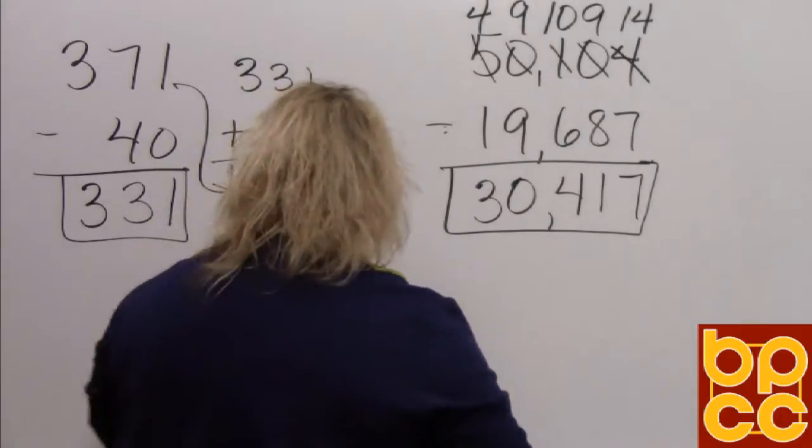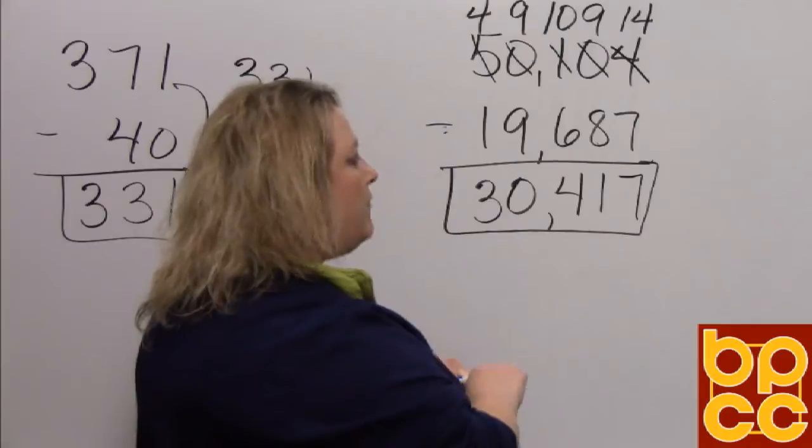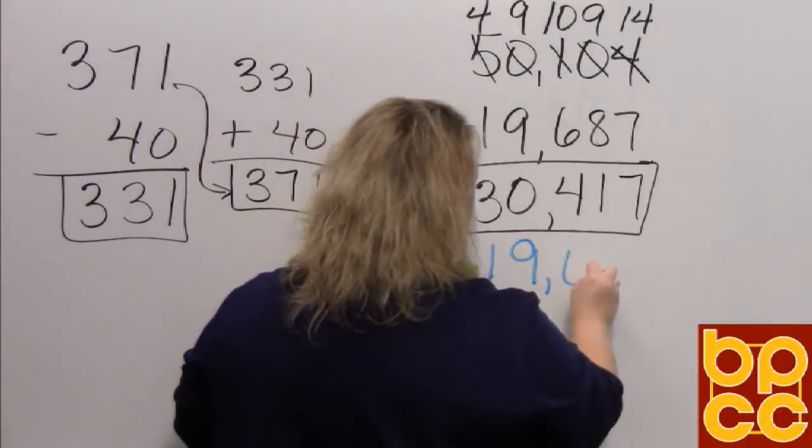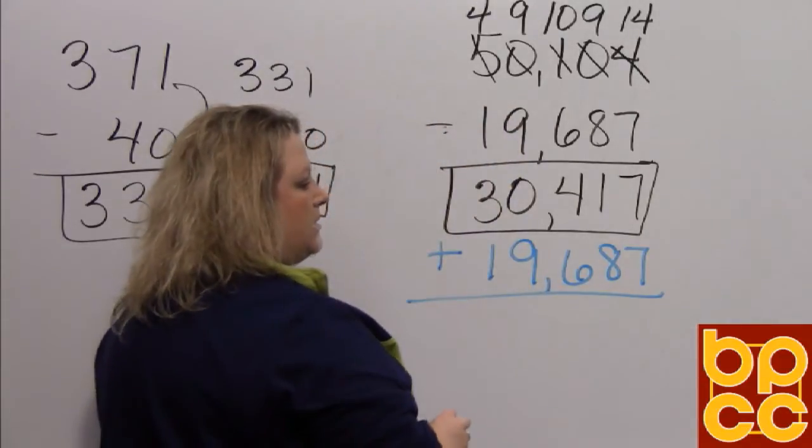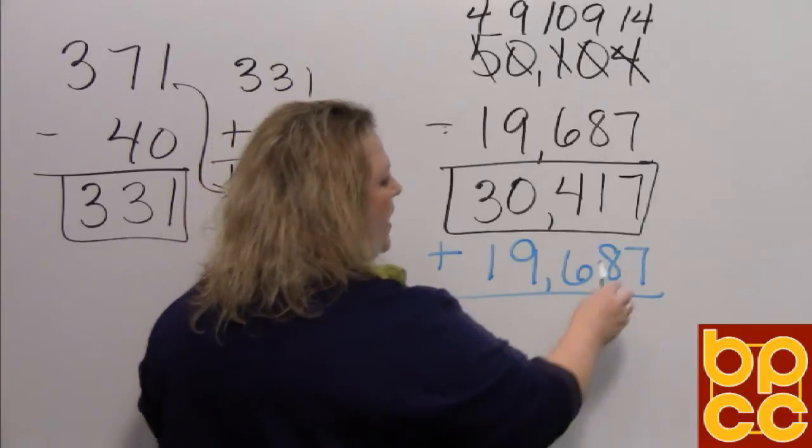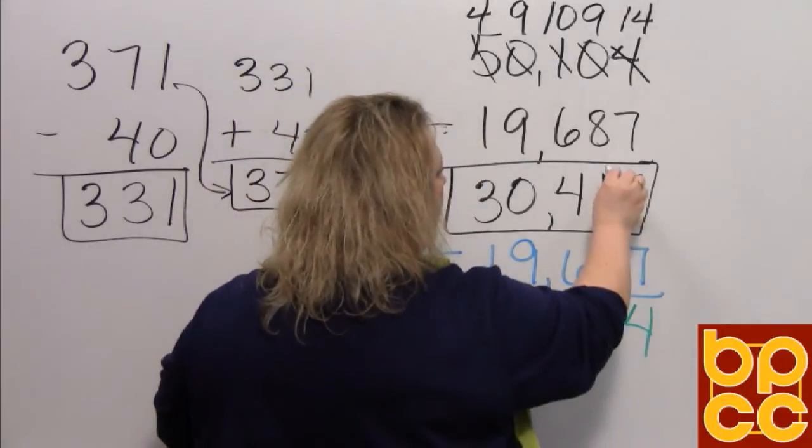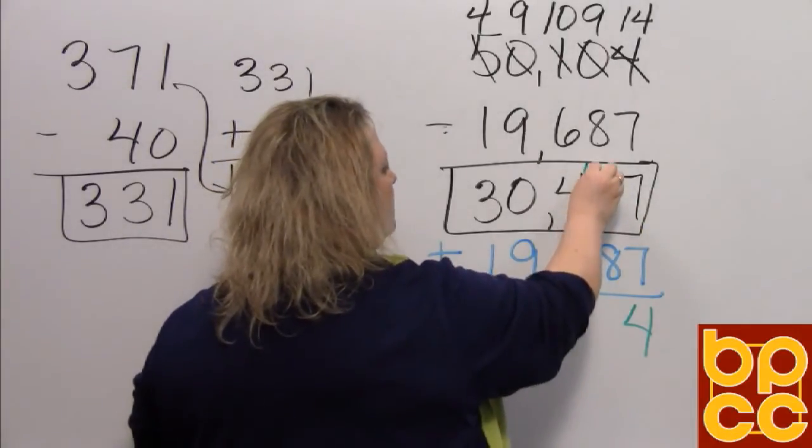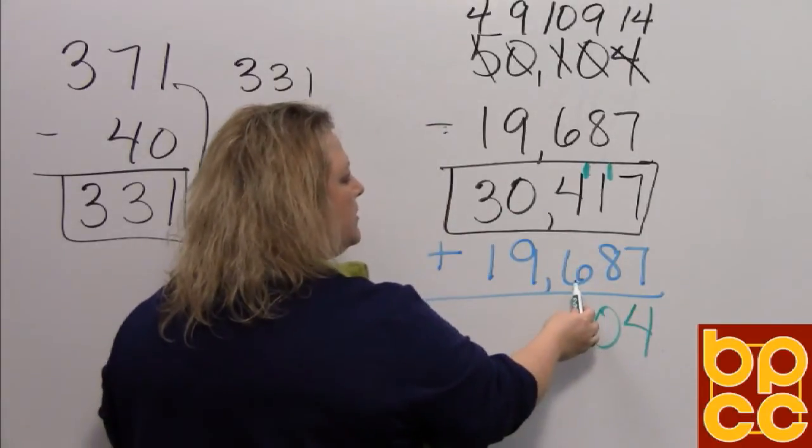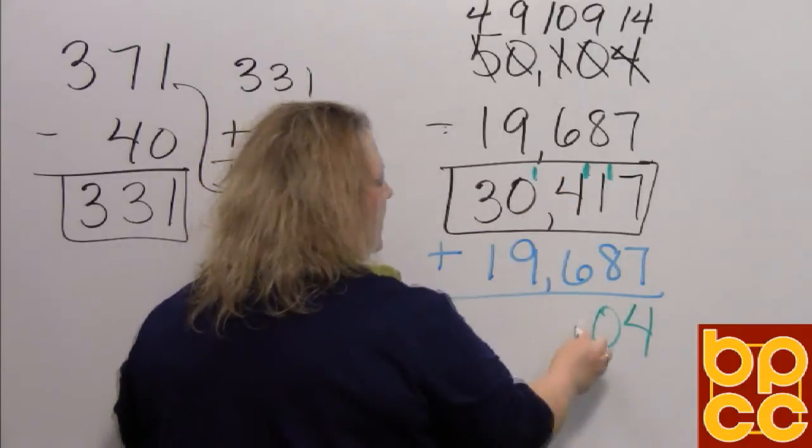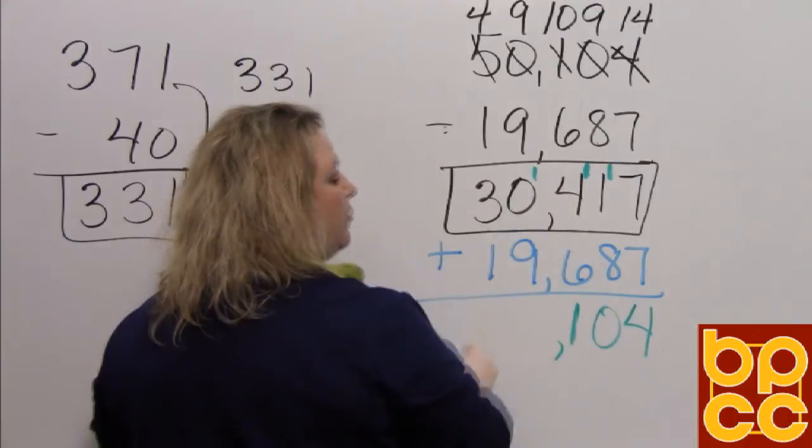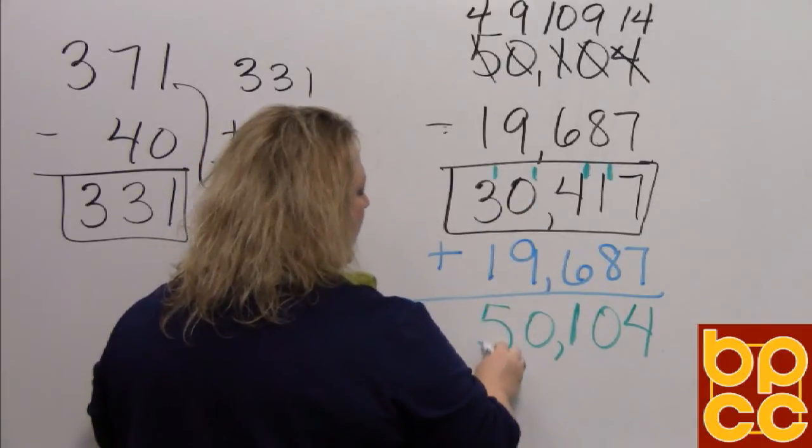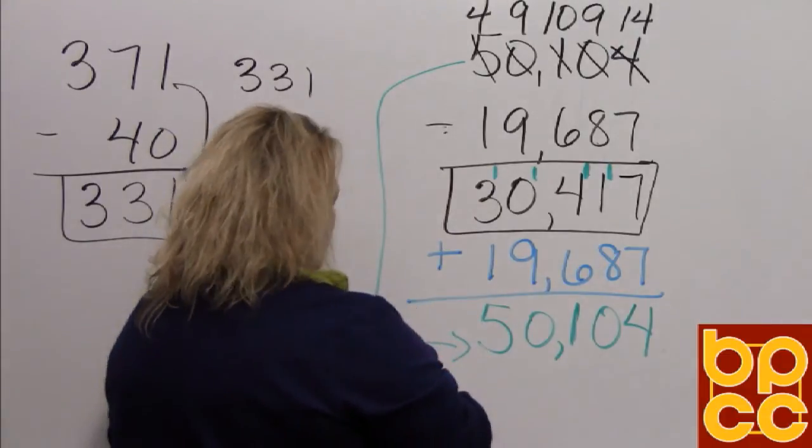In order to see if I did it correctly, I want to add back what I took away to see if I get 50,104. So in order to do that, I'm going to save room and I'm going to add 19,687 right underneath my answer to see if I got this correct. When I do this, I have 7 plus 7 makes 14. Write down my 4 and carry my 1. I'm writing that in green so you can see. 8 plus 1 makes 9 plus one more that I carried over makes 10. So I carry that 1, put the 0 down. 6 plus 4 makes 10 plus the 1 that I carried. That makes 11. 9 plus 0 is 9 plus the 1 that I carried makes 10. Carry that 1. And then 1 plus 3 is 4 plus that 1 is 5. And yes, I did get what I started with, so I know that I did that correctly.